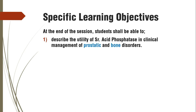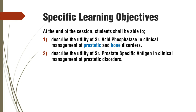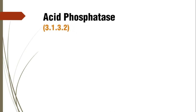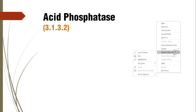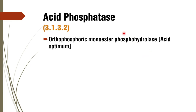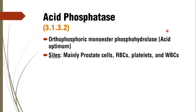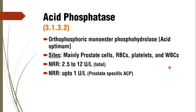Coming to Acid Phosphatase, its enzyme classification number is 3.1.3.2. It is Orthophosphoric Monoester Phosphohydrolase, and it has an acid optimum, whereas Alkaline Phosphatase requires alkaline pH. The sites are mainly prostate cells, RBCs, platelets, and WBCs. The normal reference range is 2.5 to 12 international units per litre for total Acid Phosphatase. There is also Prostate Specific Acid Phosphatase, with a normal reference range of up to 1 unit per litre, which is more specific and studied for diagnosis of prostatic disorders.